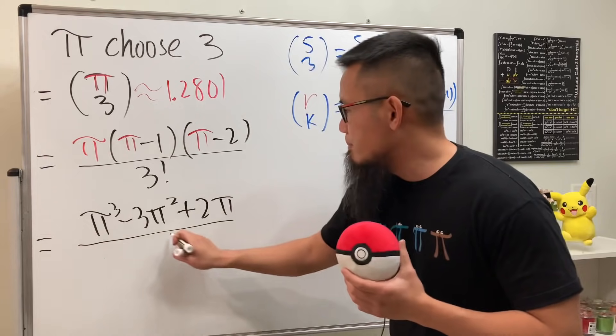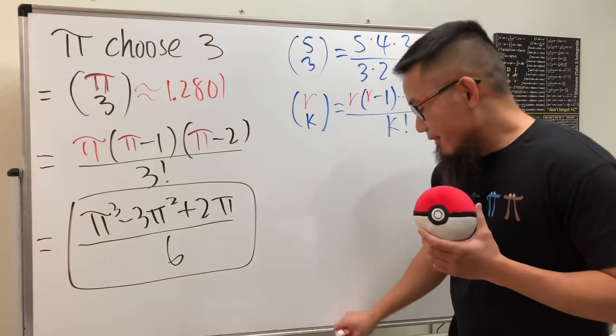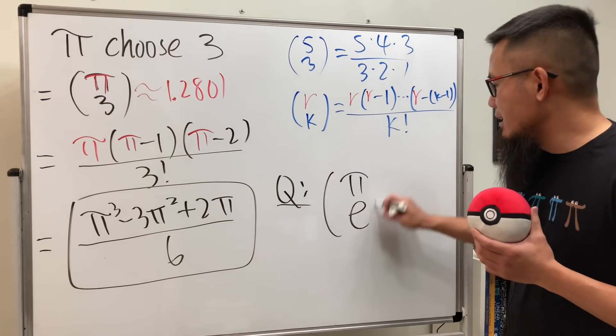And divide everybody by six. And in fact this is the value for that. And now before we go, let me ask you guys: what do you think, what's the value for pi choose e?